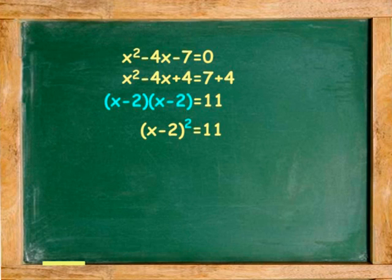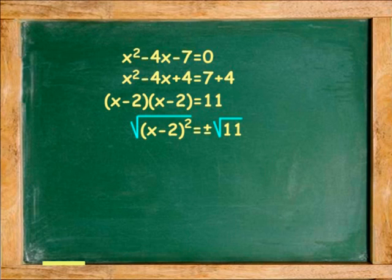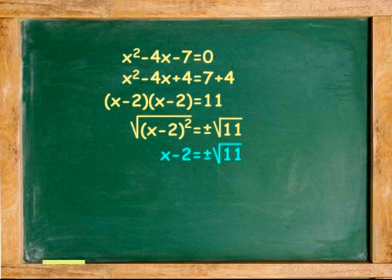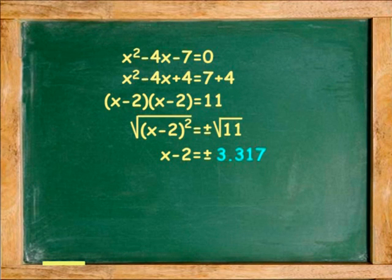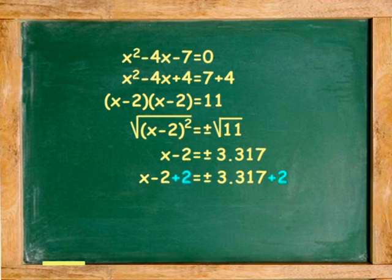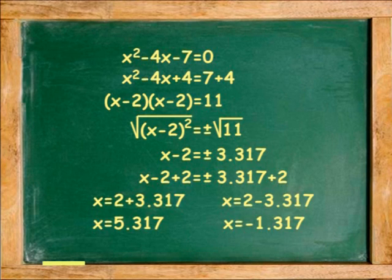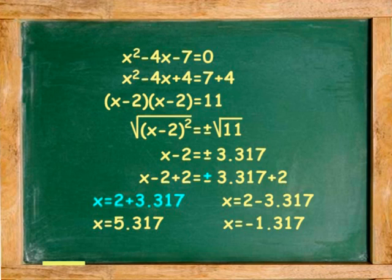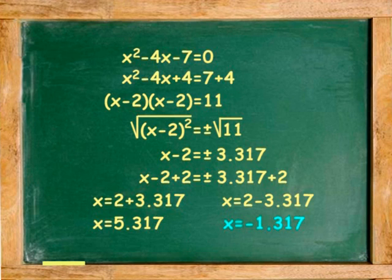Step 4: Find the square root of both sides. x minus 2 is equal to plus or minus the square root of 11, which is 3.317. Add 2 to both sides to move the negative 2 to the right. x has two values: 2 plus 3.317 and 2 minus 3.317, giving x equals 5.317 and x equals negative 1.317.